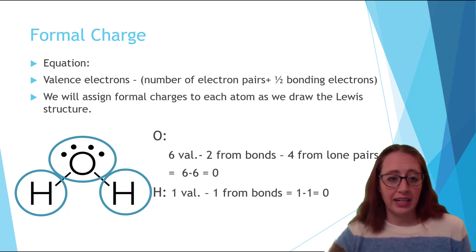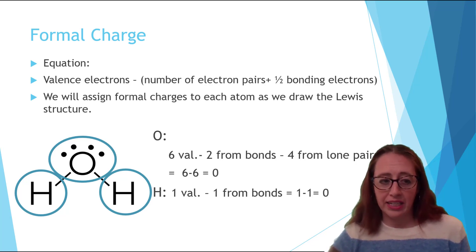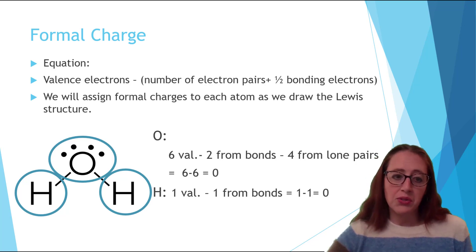Each of the hydrogens act the same so we'll talk about it for just one. Hydrogen has one valence electron and it has one electron that comes from the bond. It doesn't have any lone pairs. So that's one minus one equals zero and that's true for the other hydrogen as well. And so all atoms in this molecule have zero as their formal charge.